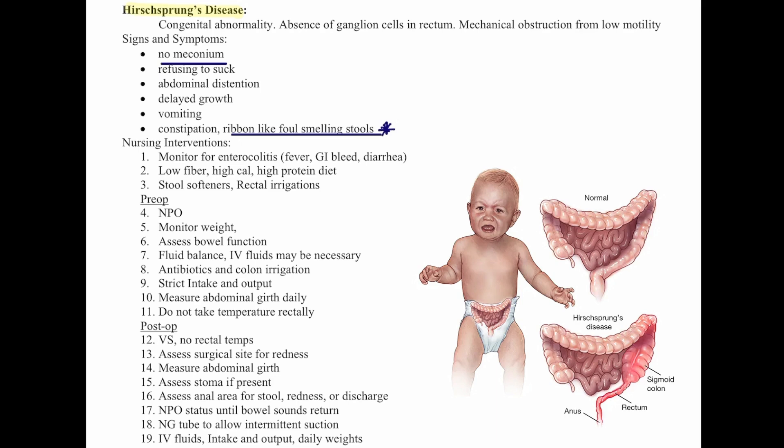Nursing interventions include monitoring for enterocolitis — fever, GI bleeding, diarrhea — and providing a low-fiber, high-calorie, high-protein diet with stool softeners. The patient may need rectal irrigations. Pre-op: NPO, monitor weights, assess bowel function and fluid balance, IV fluids as needed, antibiotics, colon irrigation, strict I&Os, measure abdominal girth daily, and do not take rectal temperatures.